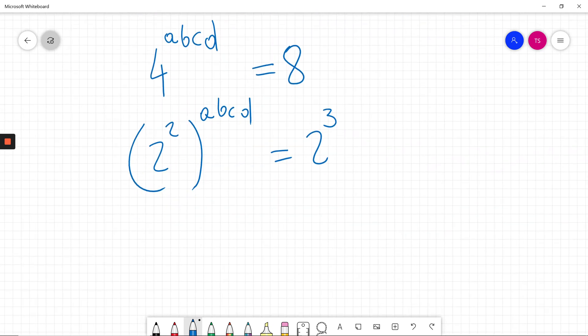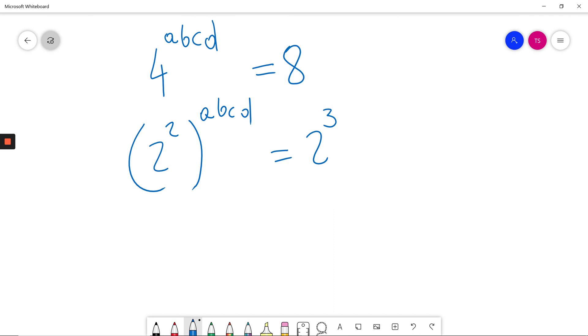Now on the left side I'm using power rule, power to power, I multiply powers. So I have 2 to the power of 2 times A times B times C times D. This is equal to 2 cubed.